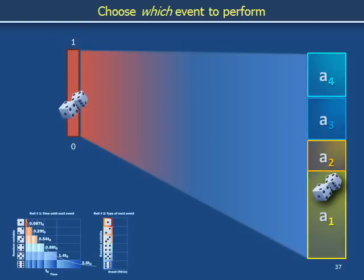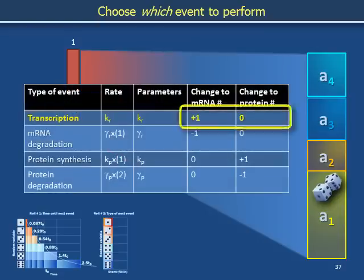In this example, the dice have landed in the yellow box corresponding to reaction type 1. According to the table previously outlined, reaction type 1 corresponds to transcription. The stoichiometry of this reaction involves a change in the number of copies of messenger RNA of plus 1, and a change in the number of copies of protein of 0. We now apply these changes to the state of the cell.